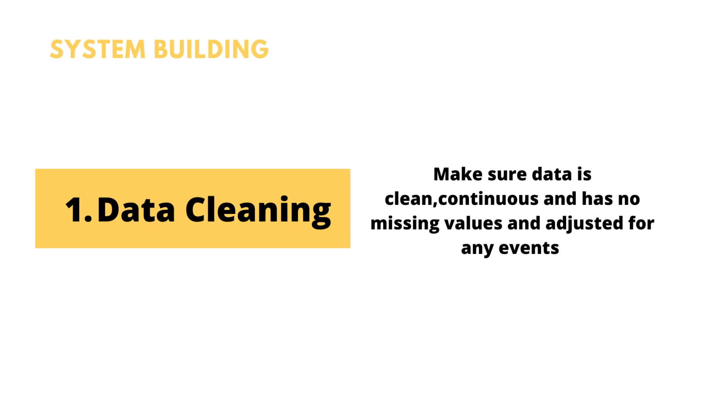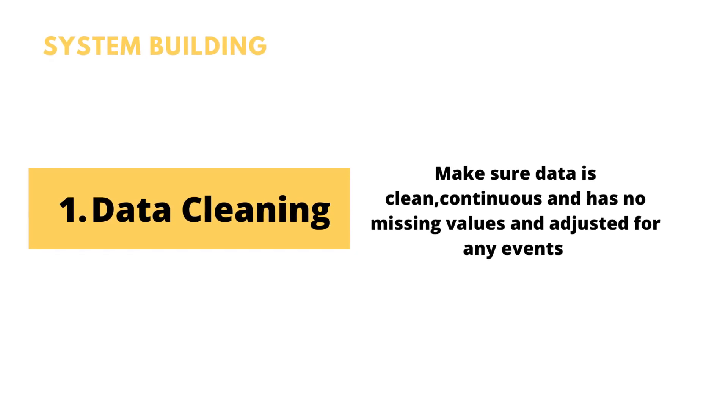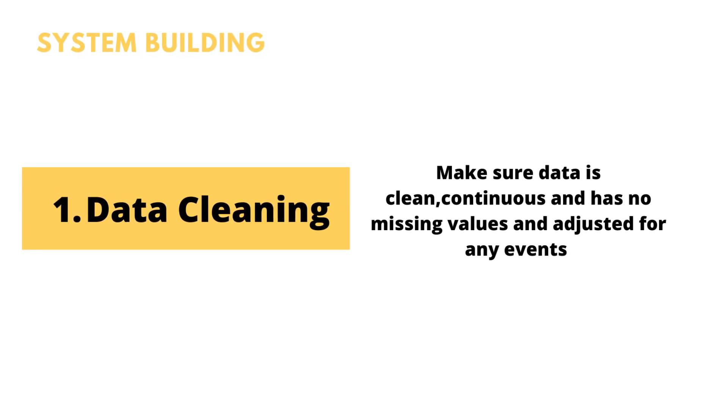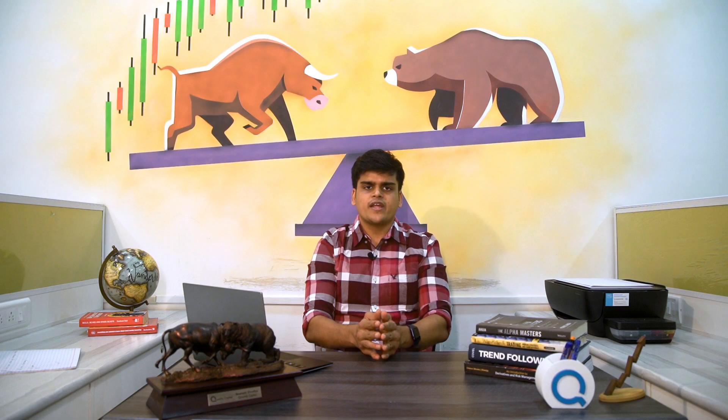The first step in building a trading system is data cleaning. You need to make sure that your data is clean, continuous, and has no missing values and is adjusted for all events. For example, if you're trading in the cash market, you need to make sure that your data is adjusted for dividends, stock splits, etc. If you're trading in the futures, you need to make sure that futures data is continuous. If you're trading options, you need to make sure that wherever there are missing values, you need to either backfill or forward fill your data. So first thing is getting your data right before doing any sort of analysis.